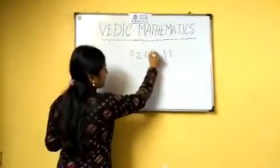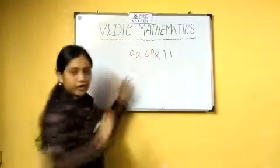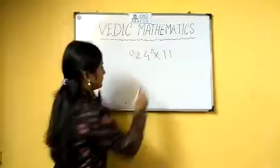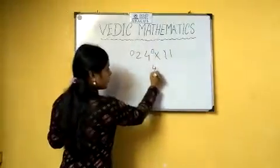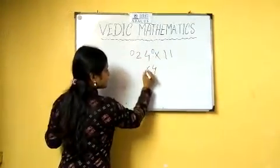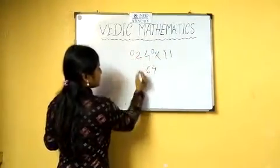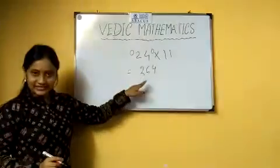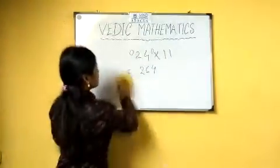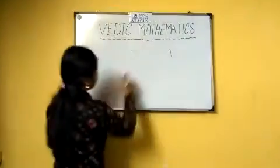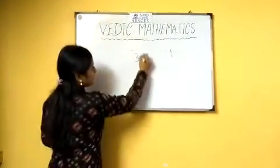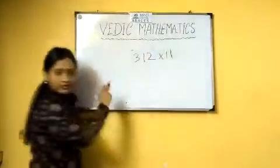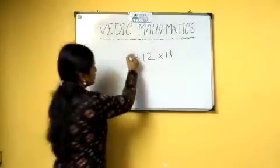Put a 0 on the left and right side of the number, then add adjacent digits: 4 plus 0 is 4, 4 plus 2 is 6, and 2 plus 0 is 2. So our answer becomes 264. The next example is 312 into 11.